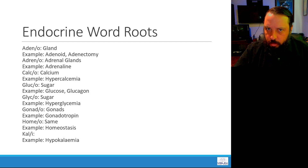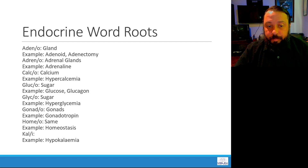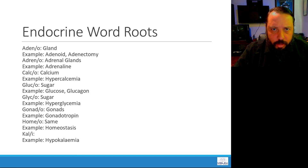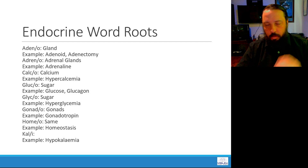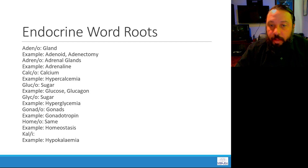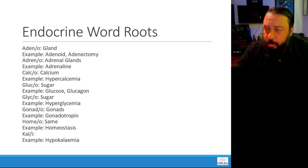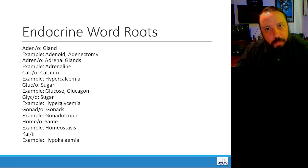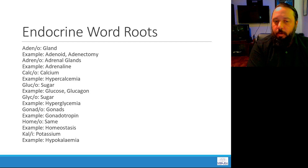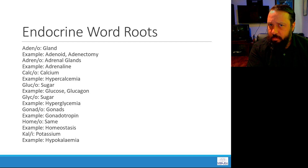Kali — here's another one where the connecting letter is an I, not an O or E. Just be aware that a different letter doesn't change anything — it's still where it connects. Hypokalemia is our example. Hypo means too little, emia means blood — too little of something in the blood. Kali means potassium, so hypokalemia means you have too little potassium in the blood.